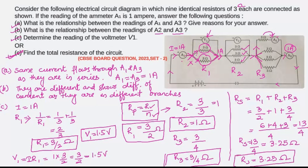Remember: for identical resistors in parallel, use R_p = R/n. For identical resistors in series, use R_s = n × R, where n is the number of resistors and R is the value of each. These formulas make calculation faster in exams, but they apply only when all resistances have identical values.